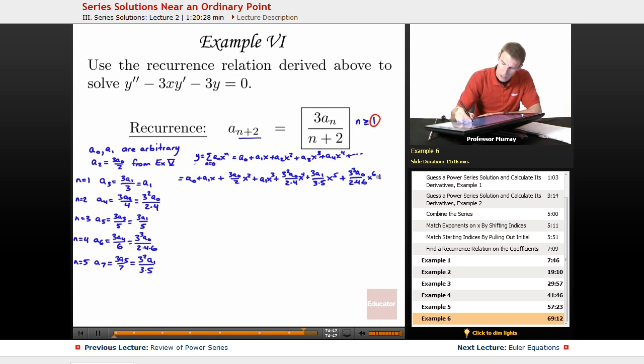Plus 3A1 over 3 times 5, x to the 5th, plus 3 cubed A0 over 2 times 4 times 6, x to the 6th, plus 3 squared A1 over 3 times 5 times 7, x to the 7th, and so on.